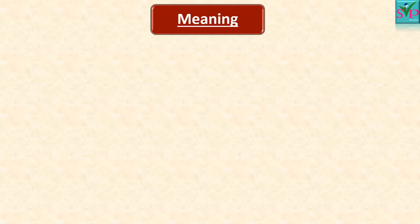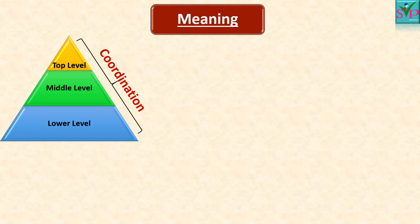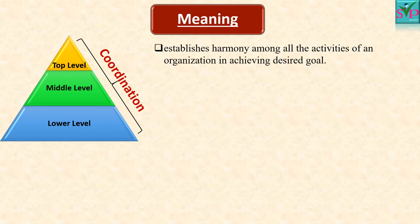Let us study the meaning of coordination in detail. As you all know, there are three levels of management: top level, middle level, and lower level. There are so many employees working in the organization from top to lower level. Therefore, there is a need for coordination in the entire organization, which brings harmony in all activities to achieve desired goals.